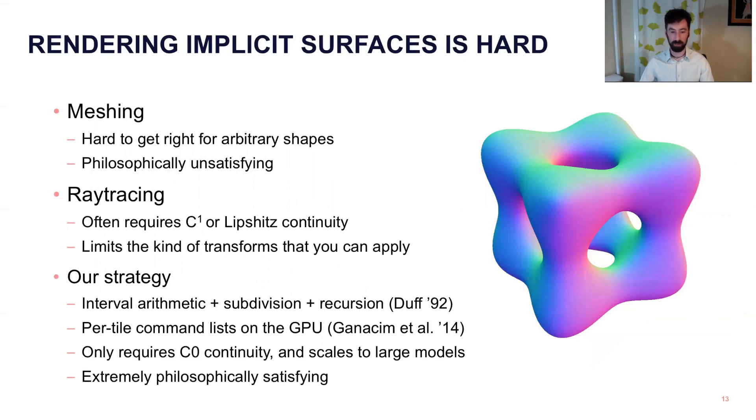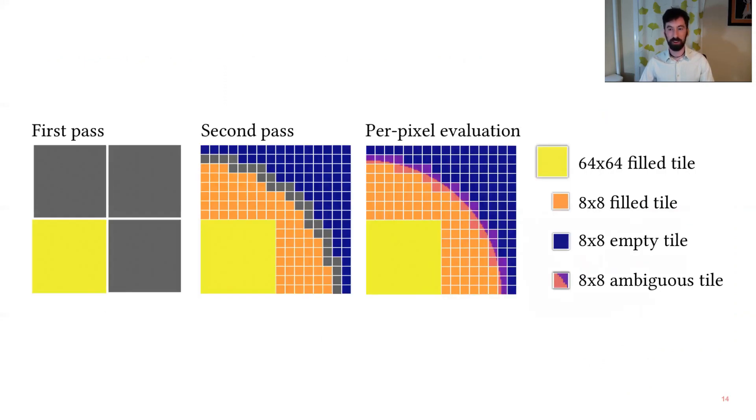Our strategy is building on two different ideas. So we're using a paper from 92 by Duff that talks about using recursion and subdivision to evaluate, and interval arithmetic to do this evaluation, and then more modern work using massively parallel vector graphics and that line of research. So using per-tile command lists on the GPU. This is a very high-level overview of the algorithm which we're going to revisit a couple times. For now just notice that we're evaluating big regions of space, we're marking some as empty and filled, and then we're subdividing.